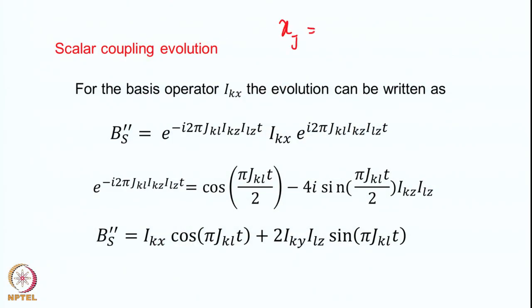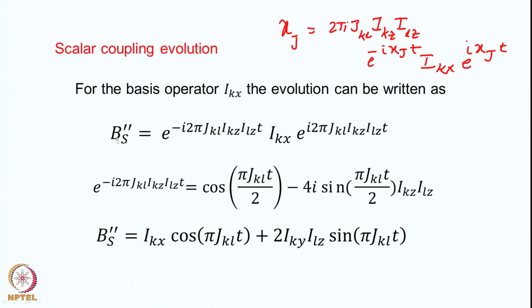To remind you what the scalar coupling Hamiltonian is: the scalar coupling Hamiltonian is written as Hj = 2π·Jkl·IKz·ILz, where Jkl is the coupling constant between two spins K and L. This is the coupling Hamiltonian for the two-spin case. For the evolution, we need to calculate e^(−iHjt), and using the same basis operators this will be e^(iHjt). The operator we get as a result of the evolution, BS double prime, is written explicitly as e^(−i·2π·Jkl·IKz·ILz·t) · IKx · e^(i·2π·Jkl·IKz·ILz·t).